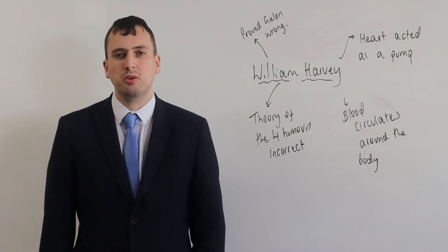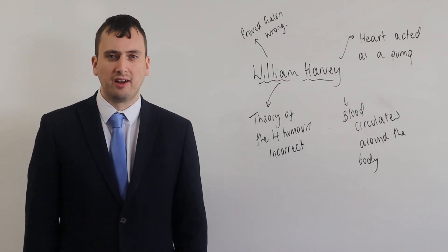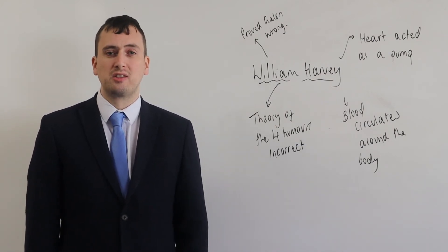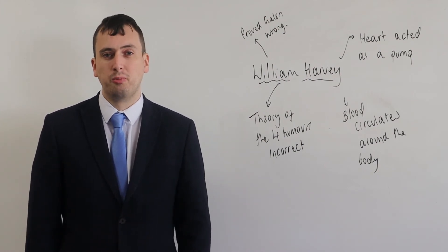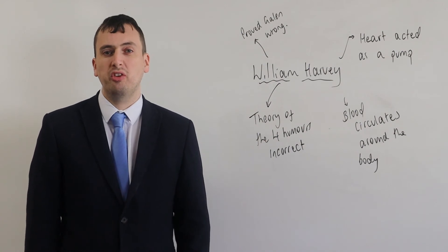He also did two further experiments which proved that he was correct. He first tried to pump blood the wrong way through the veins. He tried to pump blood past the veins but was unable to do so, proving that blood could only flow in one direction.